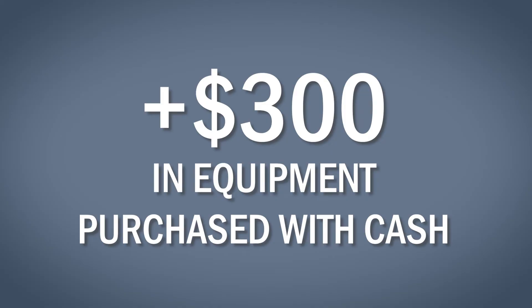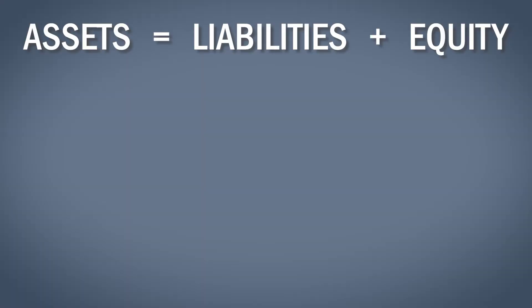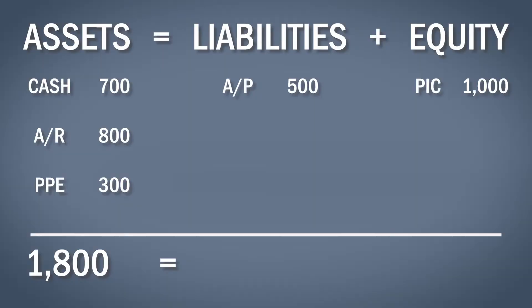Now we want to start making T-shirts internally, so we buy a printing machine for $300 with cash. Two separate assets are impacted: cash goes down by $300 and equipment goes up by $300. To decrease cash we credit the cash T-account; to increase equipment we debit the equipment T-account by $300. Using the accounting equation to verify: on the left we have cash of $700, AR of $800, and PP&E of $300 for total assets of $1,800. On the right we have accounts payable of $500 and paid-in capital of $1,000. With sales of $800 and cost of goods sold of $500, the gross profit is $300, which rolls up into retained earnings. Plugging in $300 of retained earnings, total assets equal total liabilities plus equity — the accounting equation balances.